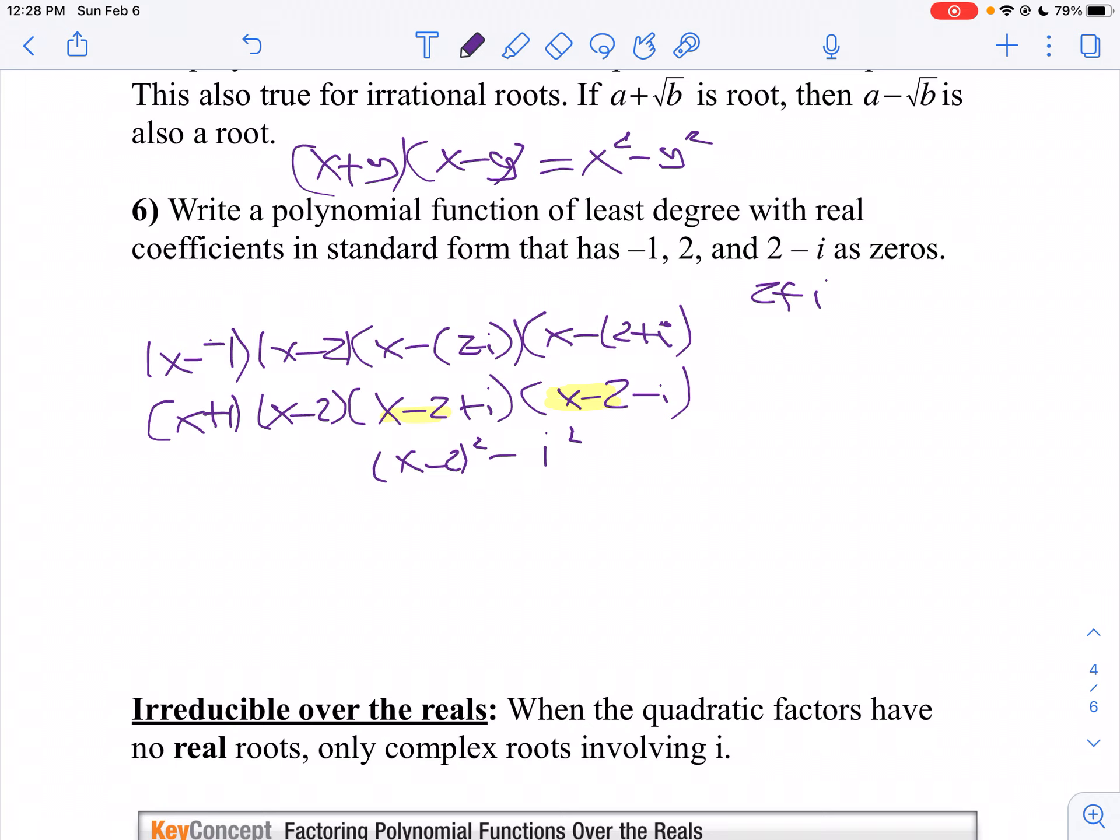I can simplify (x minus two) squared. That's x squared minus 4x plus 4, and I'm going to subtract a negative one. So this is x squared minus 4x plus 4 plus 1, which equals x squared minus 4x plus 5.